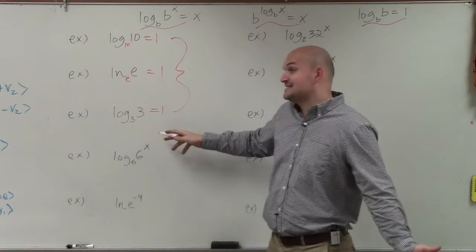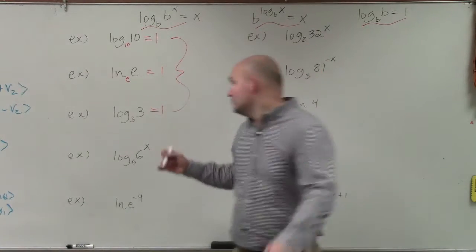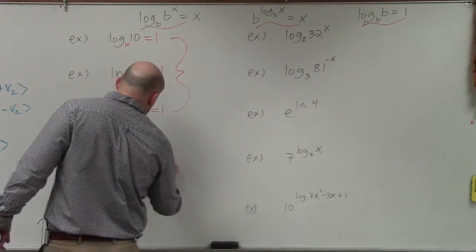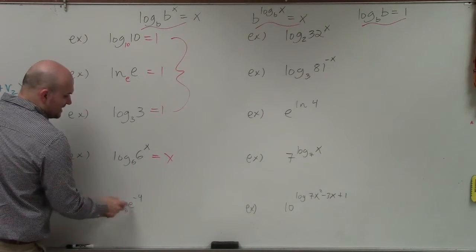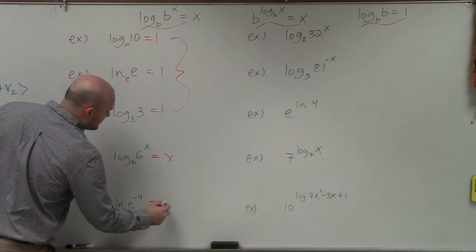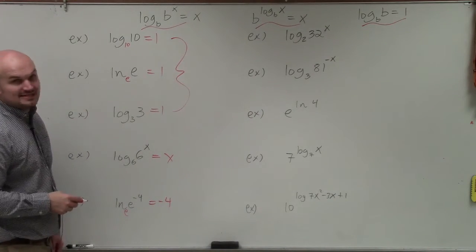We have log base 6 of 6 raised to the x. Well, like I showed you in that previous example, my simplified answer is just going to be x. Over here, we have a base E. So that's ln base E of E to the negative 4. So therefore, we know we can just evaluate that as negative 4.